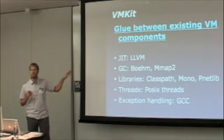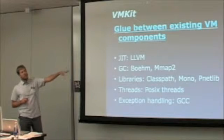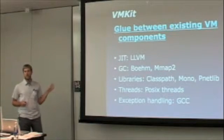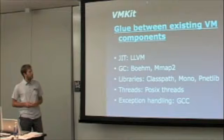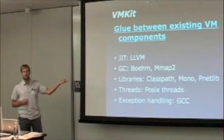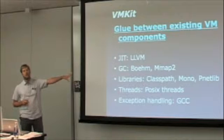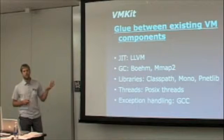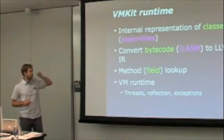For the garbage collector, it's using the Boehm garbage collector, which is a conservative garbage collector for C and C++ languages. There's also our own garbage collector that we wrote some years ago, which is a semi-precise garbage collector. For libraries, we're using existing libraries — I'm talking about the Java lang class files, for example. For Java, we're using the GNU Classpath project. For the .NET virtual machine, we're using either the Mono implementation or the Pnet implementation. For threads, we're using the underlying POSIX threads on your machine. And for exception handling, we're relying on GCC.